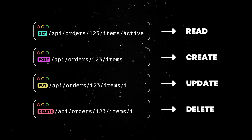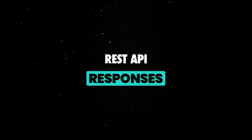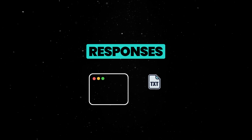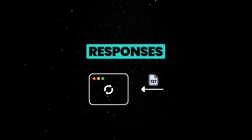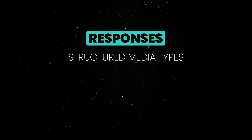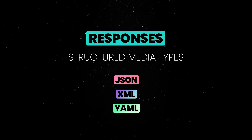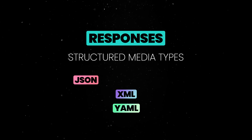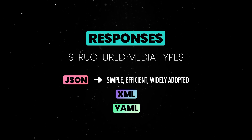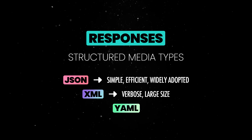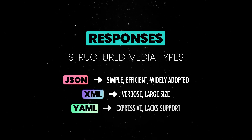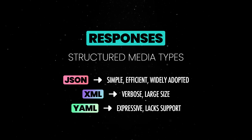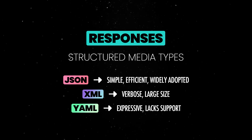At a high level, HTTP verbs map to CRUD operations in a database. Regarding API responses, a rule of thumb is to never return plain text — structured media types like JSON, XML, or YAML are preferable. JSON is ideal for REST APIs due to its simplicity, efficiency, and broad support across modern web frameworks. XML, though well-supported, tends to be verbose, leading to larger file sizes and slower processing. YAML, while expressive and concise, lacks the compatibility and support that JSON offers.